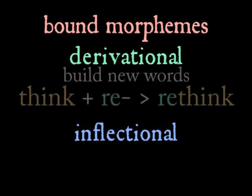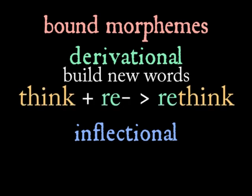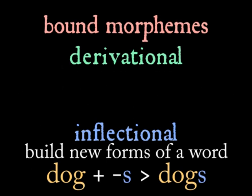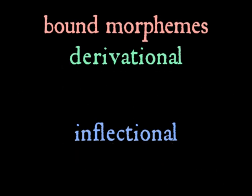Derivational morphemes allow you to form new words and new concepts out of other morphemes. Inflectional morphemes convey grammatical information. An example would be the 's' in the word 'dogs' that we've already talked about — that conveys the grammatical information that the word is plural. So keep an eye out for both of these types.